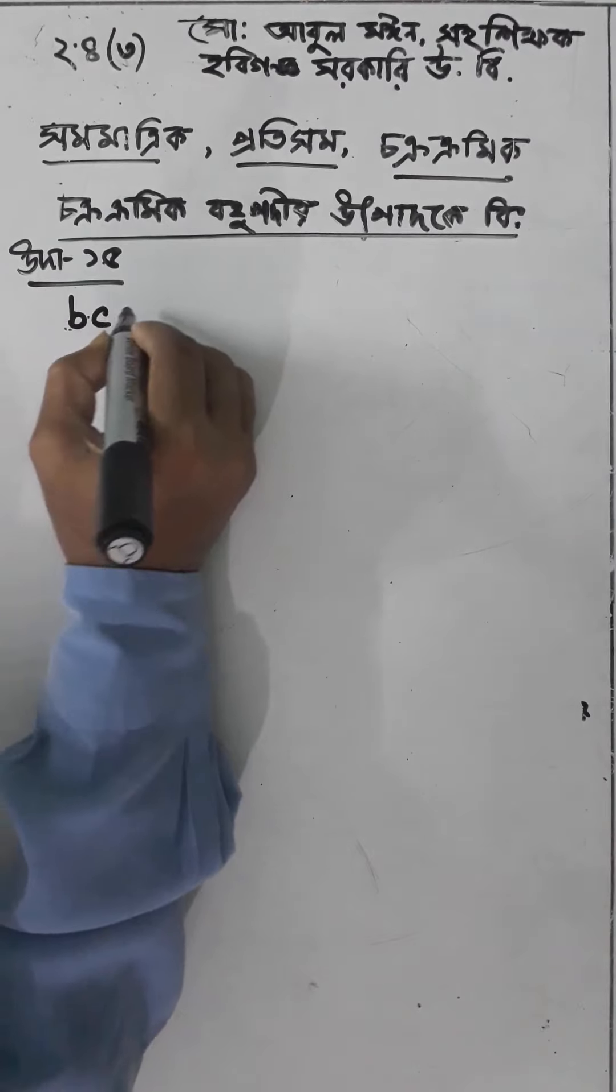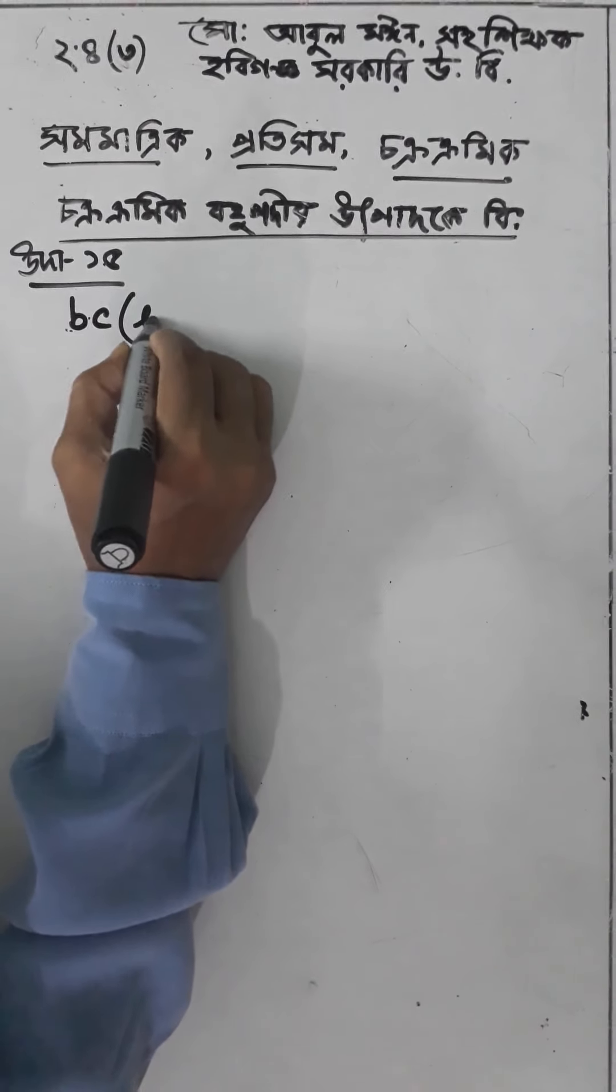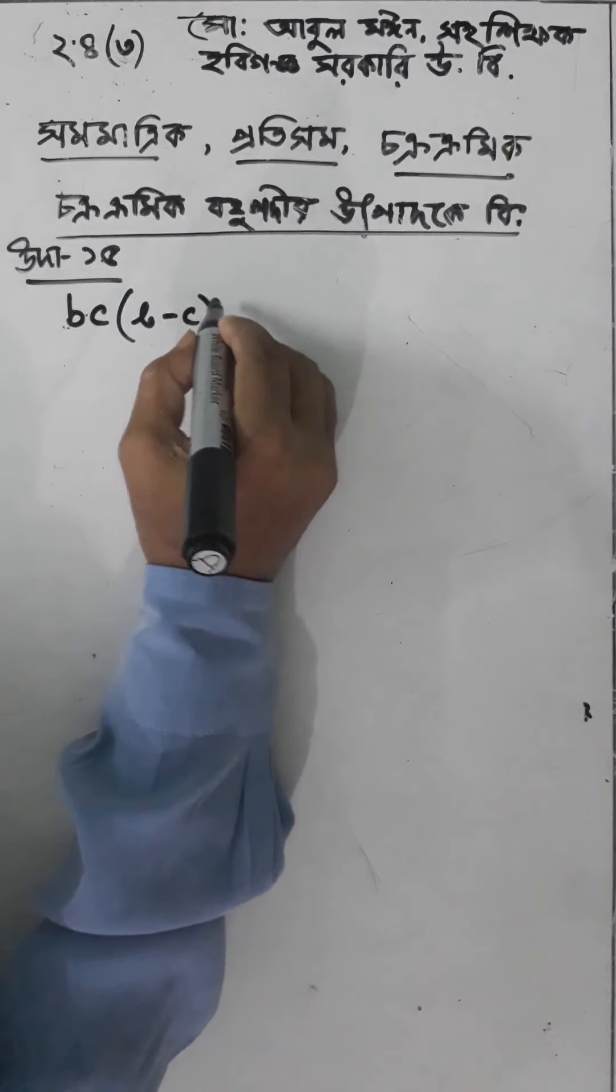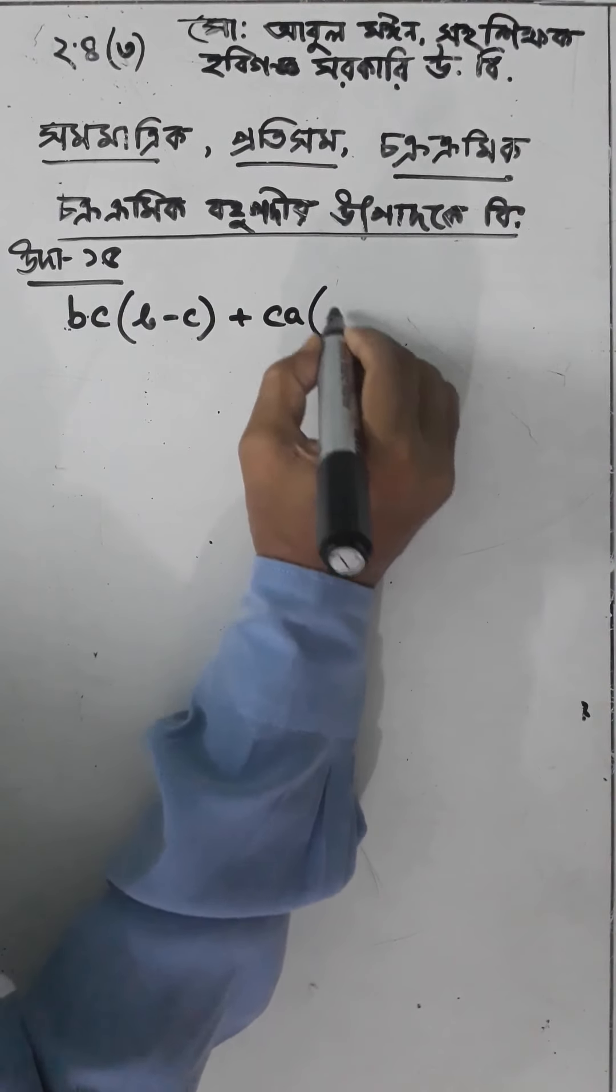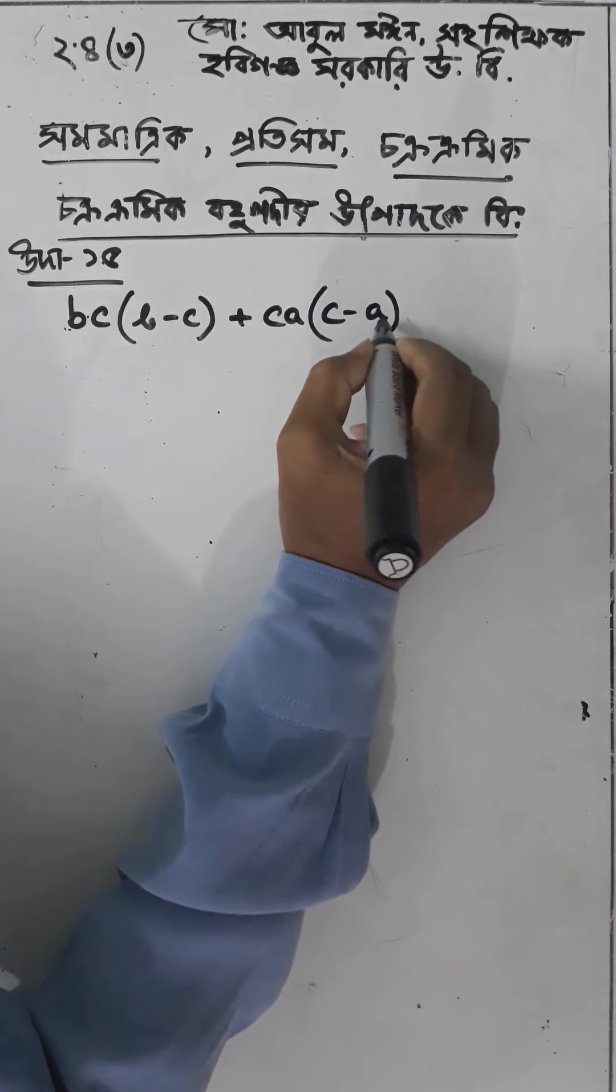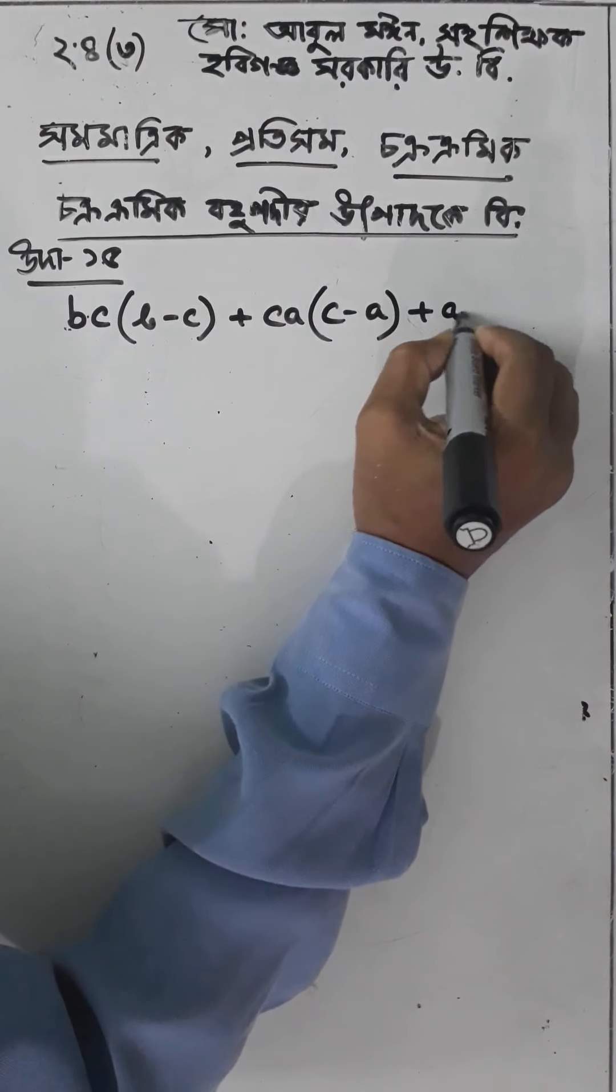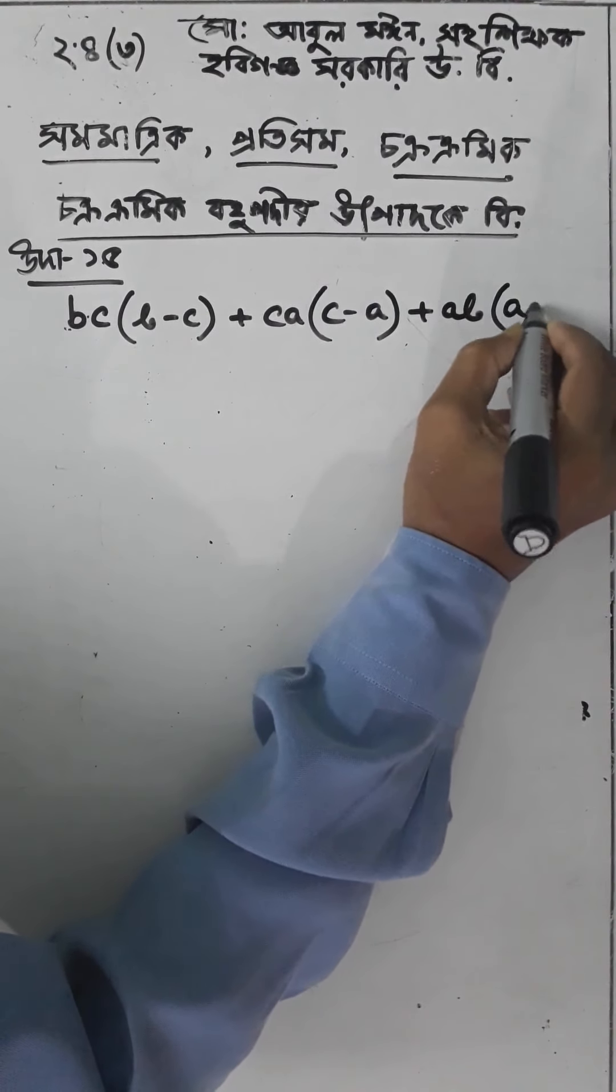BC into B minus C plus CA into C minus A plus AB into A minus B.